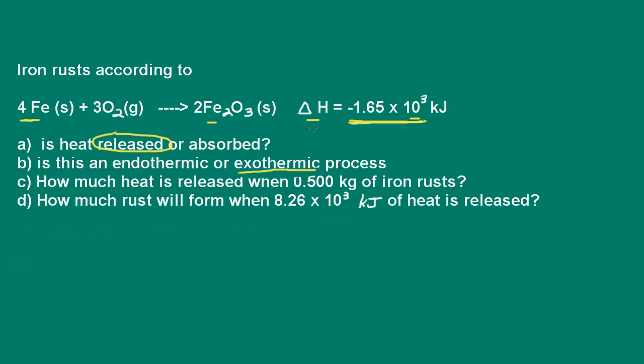You can think of heat being a product of the reaction for an exothermic reaction. For an endothermic reaction, then you can think of heat as a reactant. How much heat is released when 0.5 kilograms of iron rusts? Well, what we need to do is we need to convert that 0.5 kilograms to moles of iron.